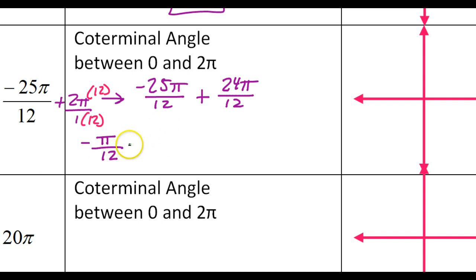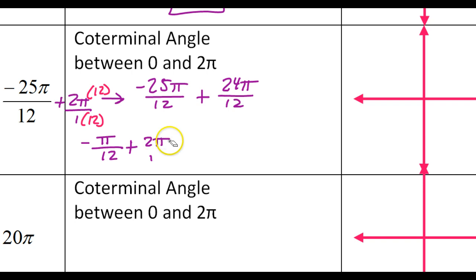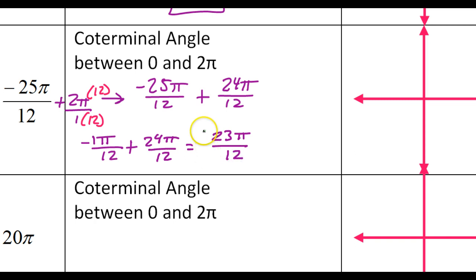So I have to keep going and add another 2 pi. Again, 2 pi over 1, and multiplying by 12 gives 24 pi over 12. So I need to add 24 pi over 12 again. This time, negative 1 plus 24 gives me 23. So 23 pi over 12 — that's going to be my coterminal angle.